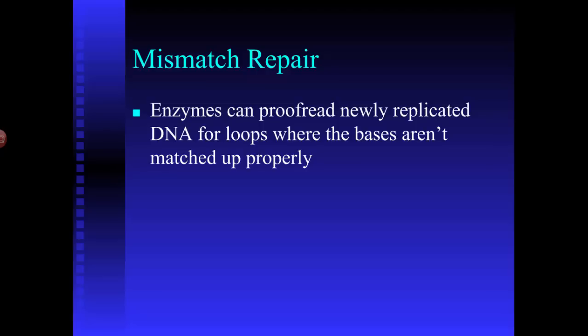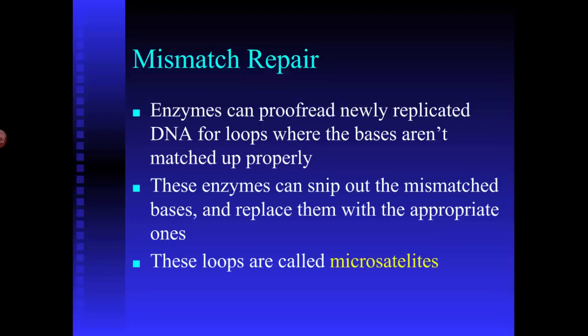When bases aren't matched up properly, they won't bond, and you'll have a little section of DNA that forms a loop. That loop is called a microsatellite. These loops cause problems because as the DNA goes to continually replicate itself, DNA polymerase runs into the loop and can't go any further. So we have mismatch repair enzymes that snip out the mismatched bases and replace them with the appropriate base, so the DNA comes back together and forms a nice neat double helix.